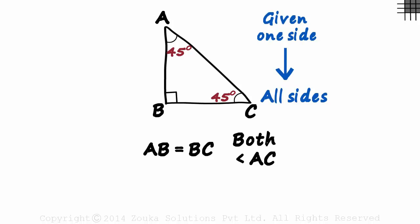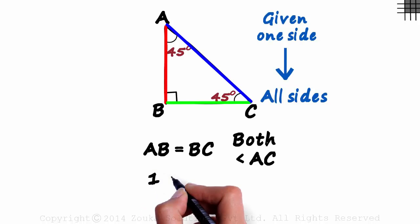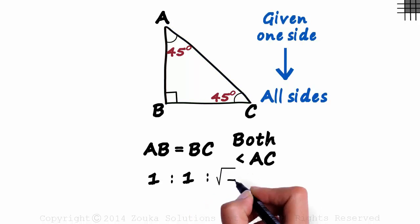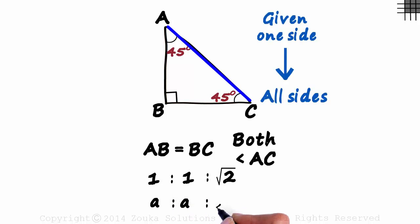In the 45-45-90 triangle, the three sides are in the ratio 1 is to 1 is to root 2. In variable terms, if AB is a, then BC will also be a and AC will be a root 2.